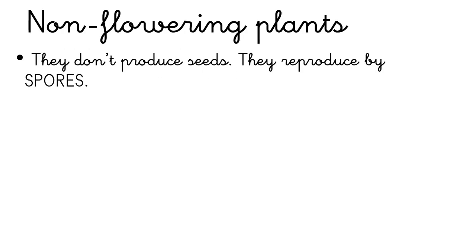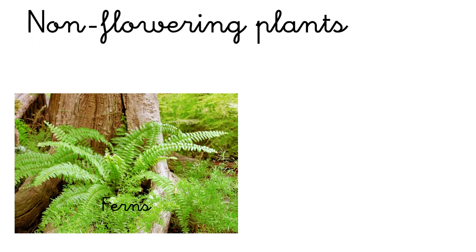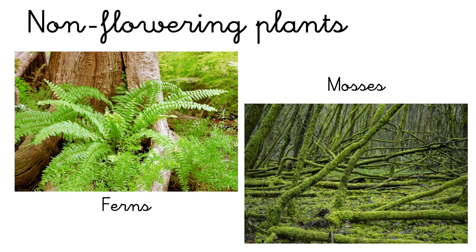The other classification is non-flowering plants. They don't produce seeds — they reproduce by spores. These black dots that you can see in the picture are the spores. Some examples of non-flowering plants are ferns and mosses. Mosses are the green thing that you can see on the branch.